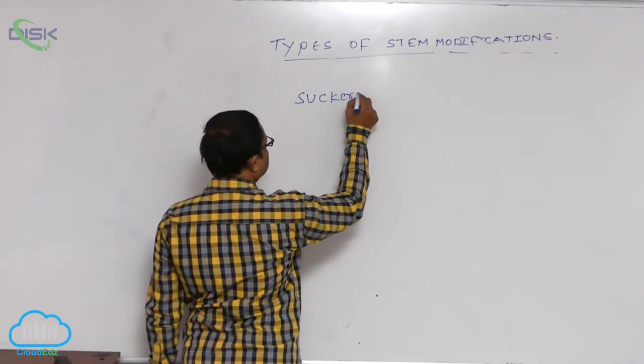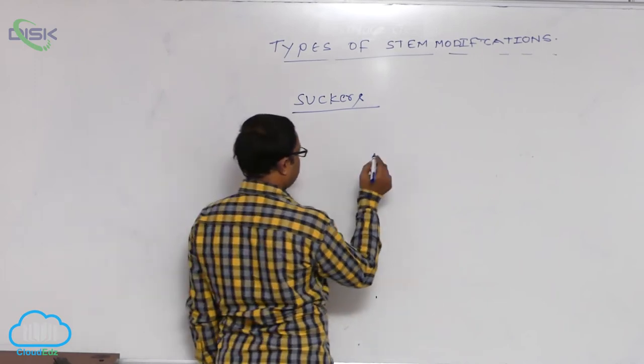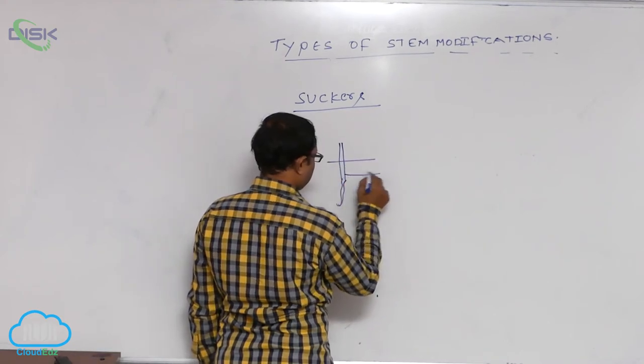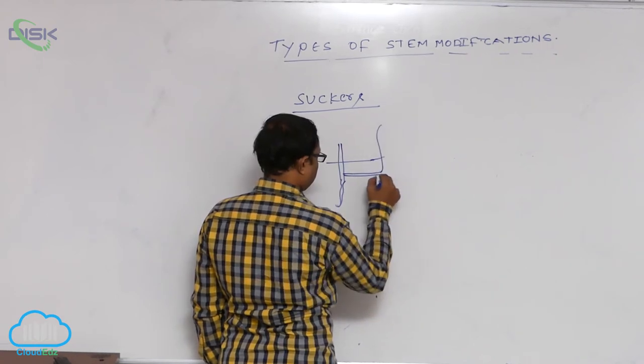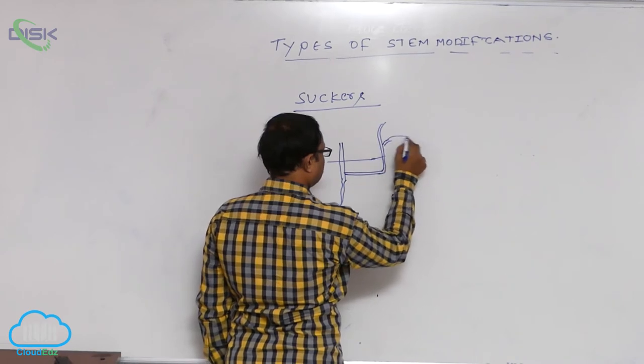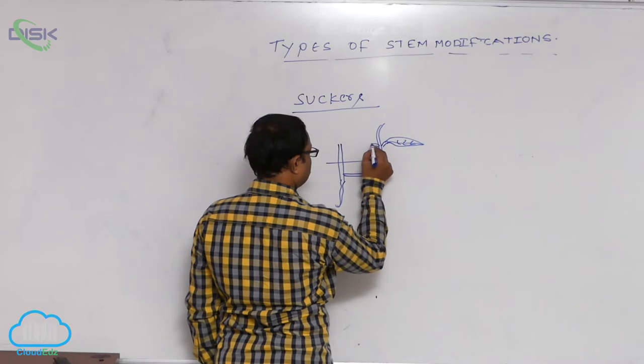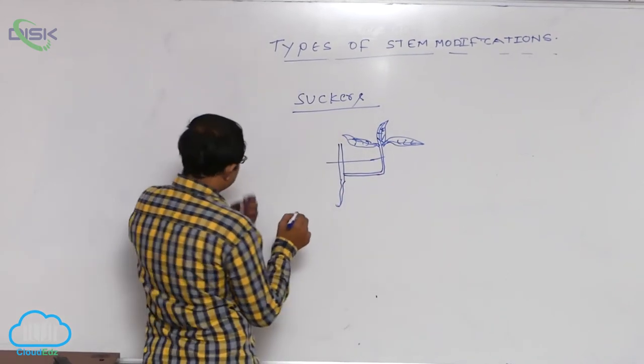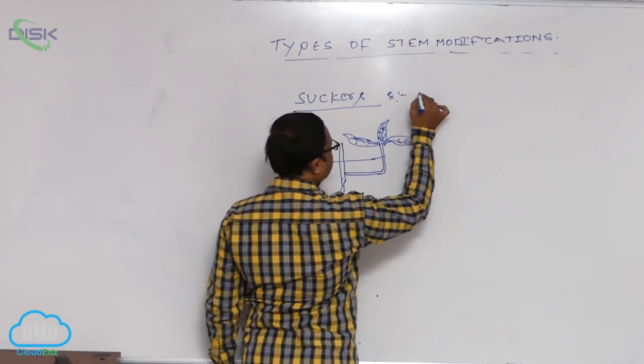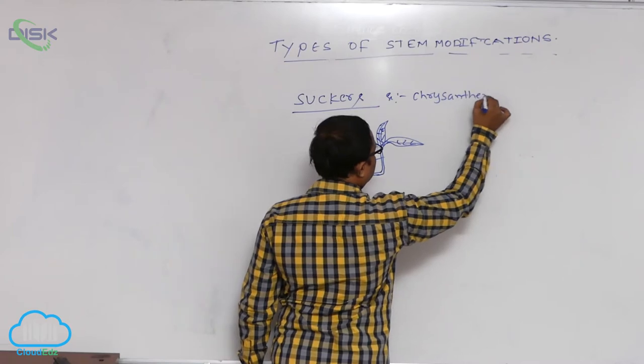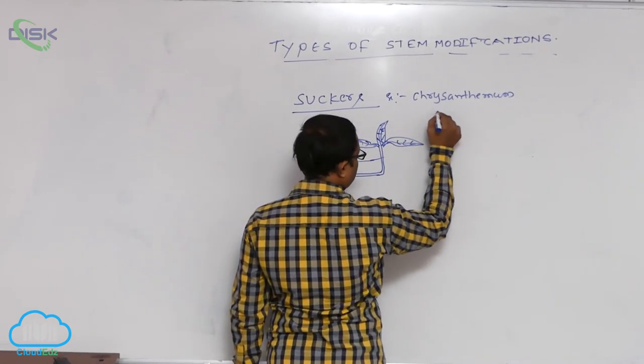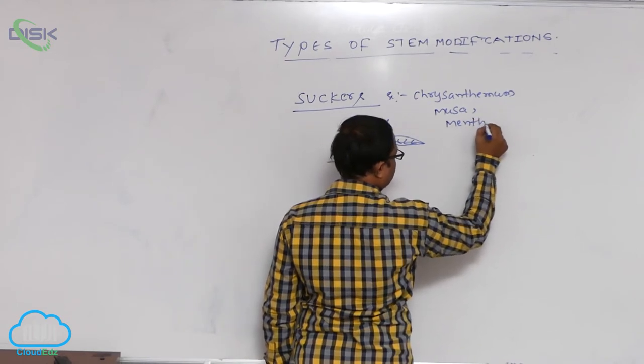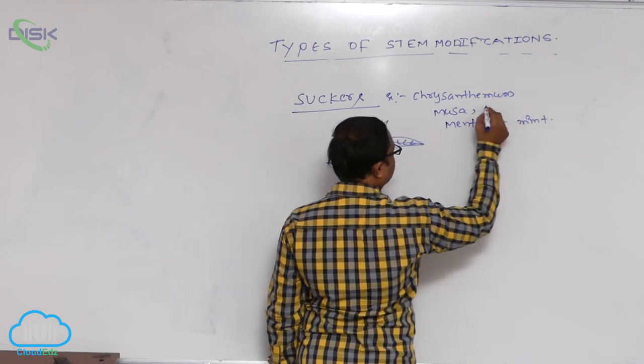SAKKAS. Examples: Chrysanthemum, so after that Musa, and Menta mint plant. Menta means what is that? Mint plant, right. Musa means banana.